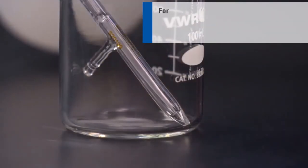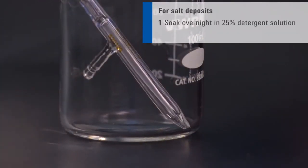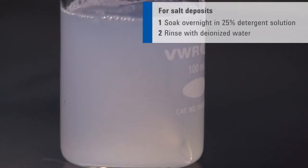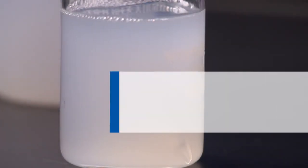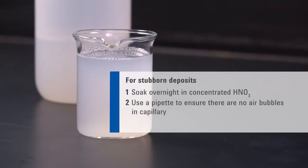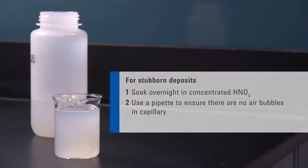Salt deposits are best removed by soaking the nebulizer overnight in 25% detergent solution. Then rinse with deionized water. To remove stubborn deposits, soak overnight in concentrated nitric acid. Use a pipette to ensure there are no air bubbles trapped in the capillary. Rinse with deionized water the following day.